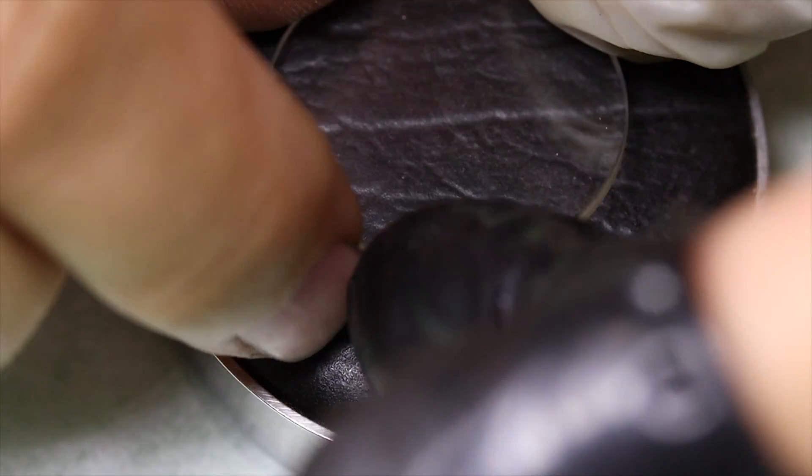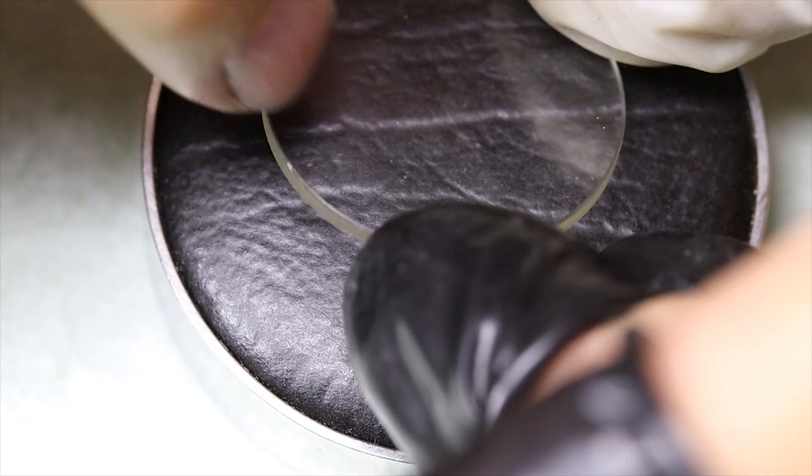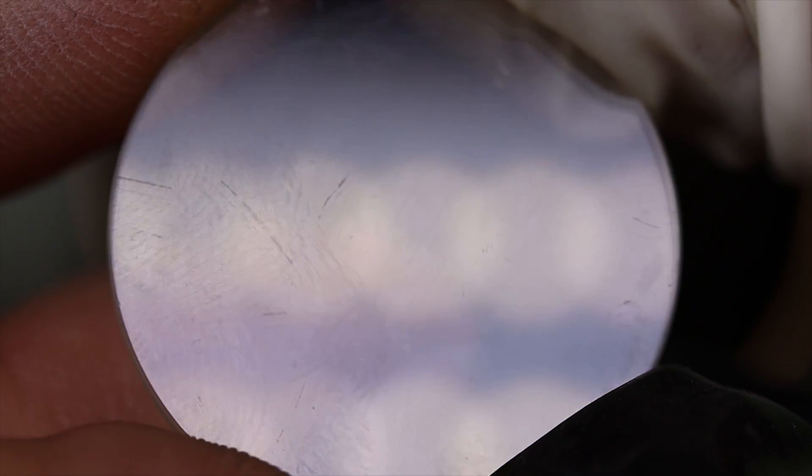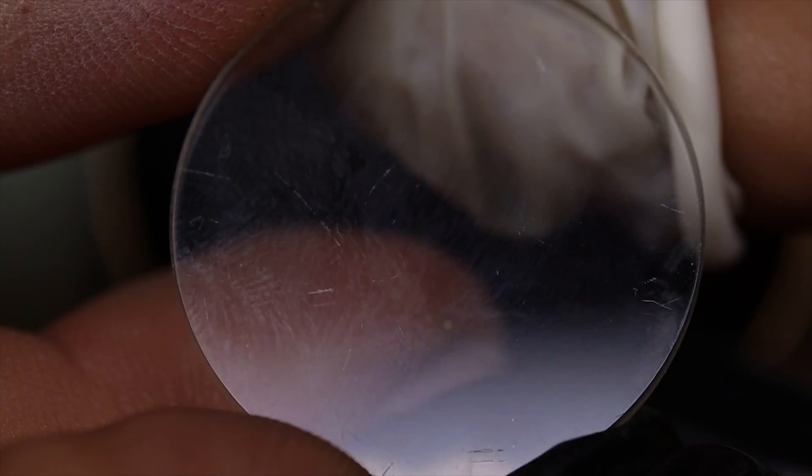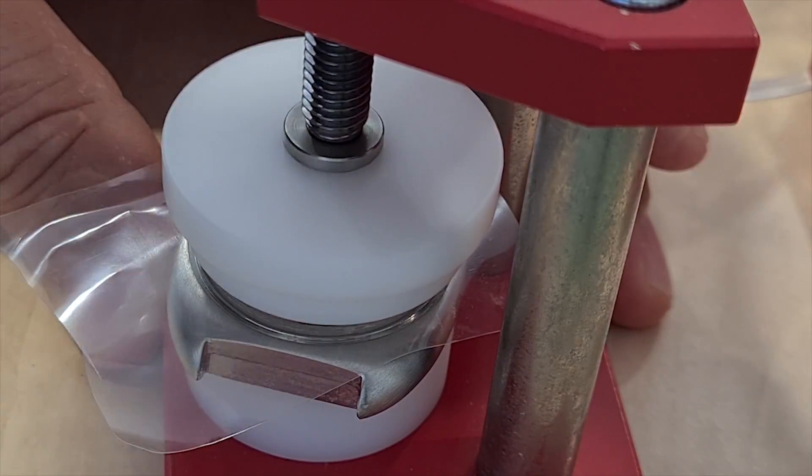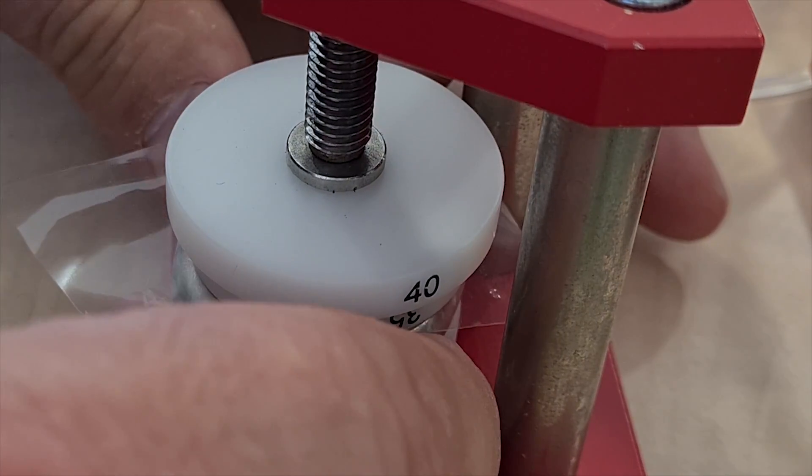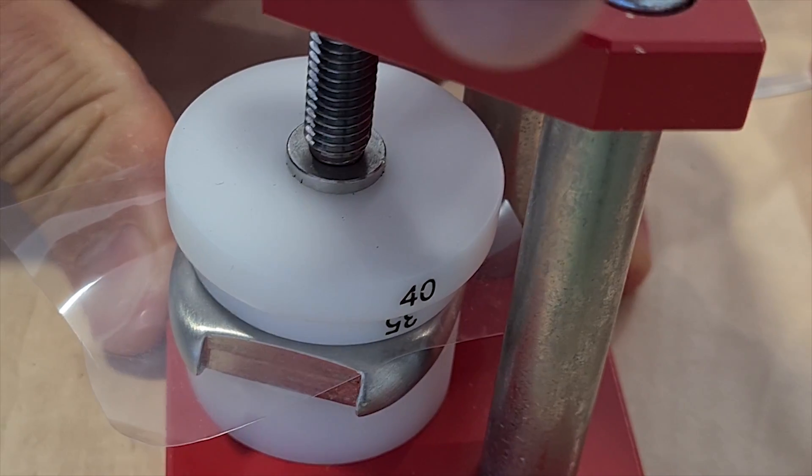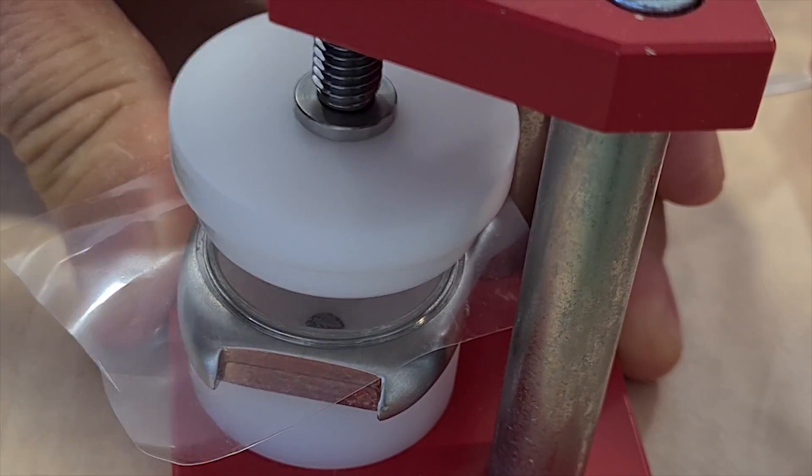Before seeing that however we need to do something about the mineral glass. The scratches aren't that bad so we could actually buff them out, but I'm gonna just put in a new one instead. So to do that we're gonna use this crystal press again. We're using a flat die given that the glass itself is flat, and then we'll simply press it in. Nothing a little brute force can't solve.